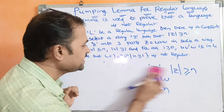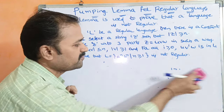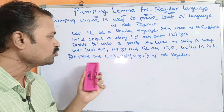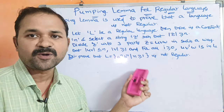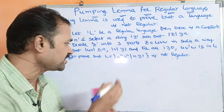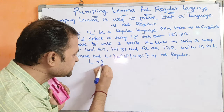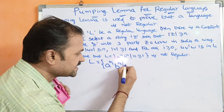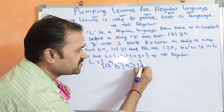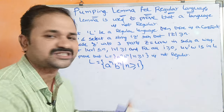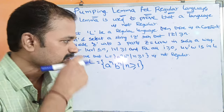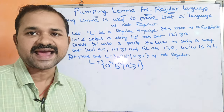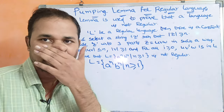So let us see an example to get perfect clarity about this theory. Prove that L = {A^n B^n | n ≥ 1} is not a regular language. By using pumping lemma we have to prove this language is not regular.